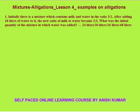The question says that initially there is a mixture of milk and water in the ratio 3 to 2. After adding 18 liters of water, the new ratio of milk to water becomes 2 is to 3. What was the initial quantity of mixture to which water was added? So we are mixing mixture and water — we can apply either water allegation or milk allegation.